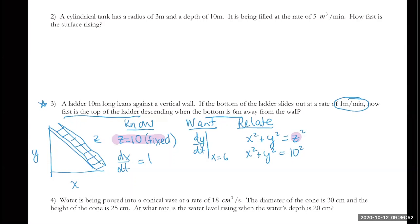The answer is dy/dt = -3/4 meters per minute — always attach units to your rate of change. The negative sign makes sense because Y is decreasing as the ladder slides down. Verify that signs are consistent: dx/dt is positive (X increasing) while dy/dt is negative (Y decreasing), which aligns with the physical situation.